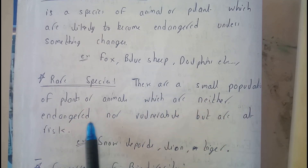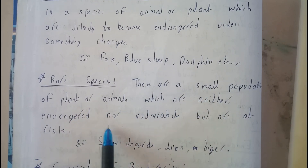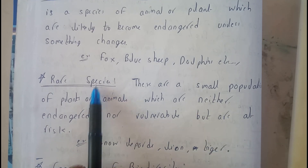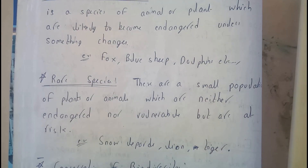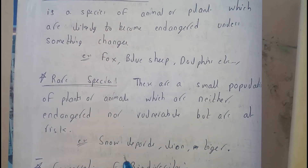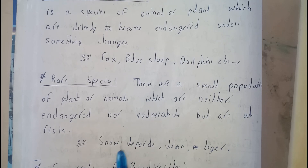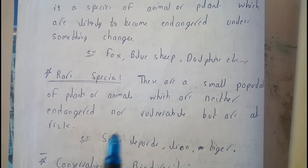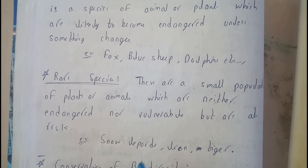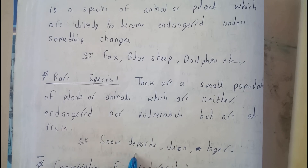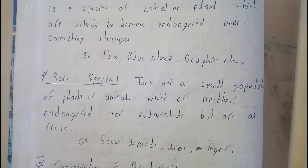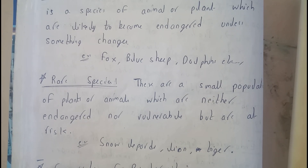Rare species are small populations of plants or animals which are neither endangered nor vulnerable, but are at risk. Rare species are simply less in number, so their extinction would be really easy. Examples include snow leopard, lions, and tigers.